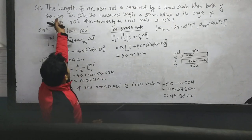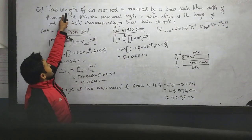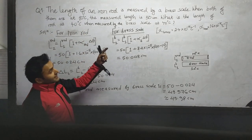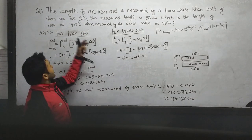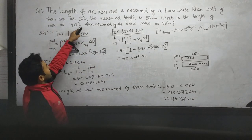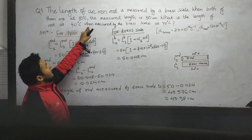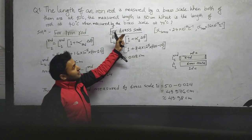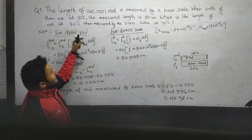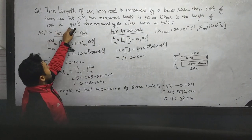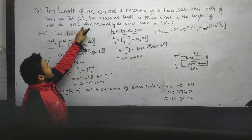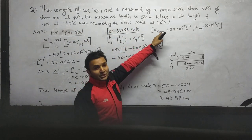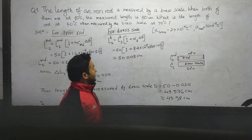The question for today is: the length of an iron rod measured by a brass scale when both of them are at 10 degrees centigrade. The measured length is 50 cm. What is the length of the rod at 40 degrees centigrade when measured by the brass scale at 40 degrees centigrade?